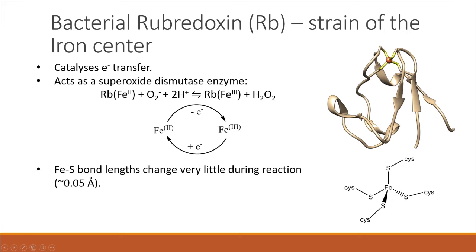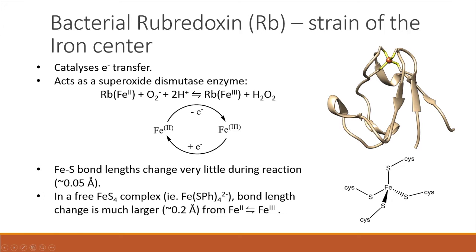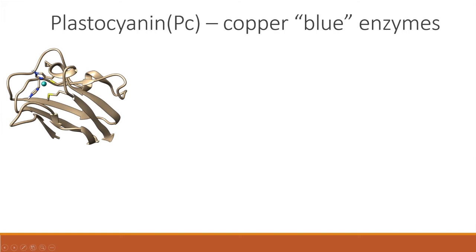Both the +2 and +3 oxidation states are high spin, to ensure minimal structural change during the process. Compare this to the relatively large bond length changes for the same reaction in a free FeS4 complex of around 0.2 angstroms. This suggests that the bond lengths in the rubredoxin are being strained in both Fe2+ and Fe3+ to resemble transition state geometry, thereby raising the energy and increasing the rate of electron transfer.